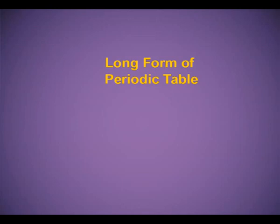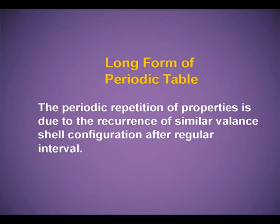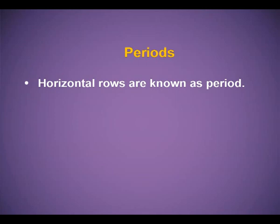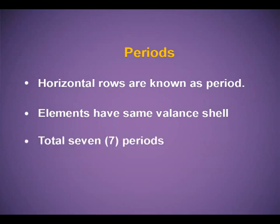The modern day periodic table is also known as the long form of periodic table. The periodic repetition of properties is due to the recurrence of similar valence shell configuration after regular intervals. The horizontal rows are known as periods; elements in a period have the same valence shell. In total, there are 7 periods numbered from 1 to 7.